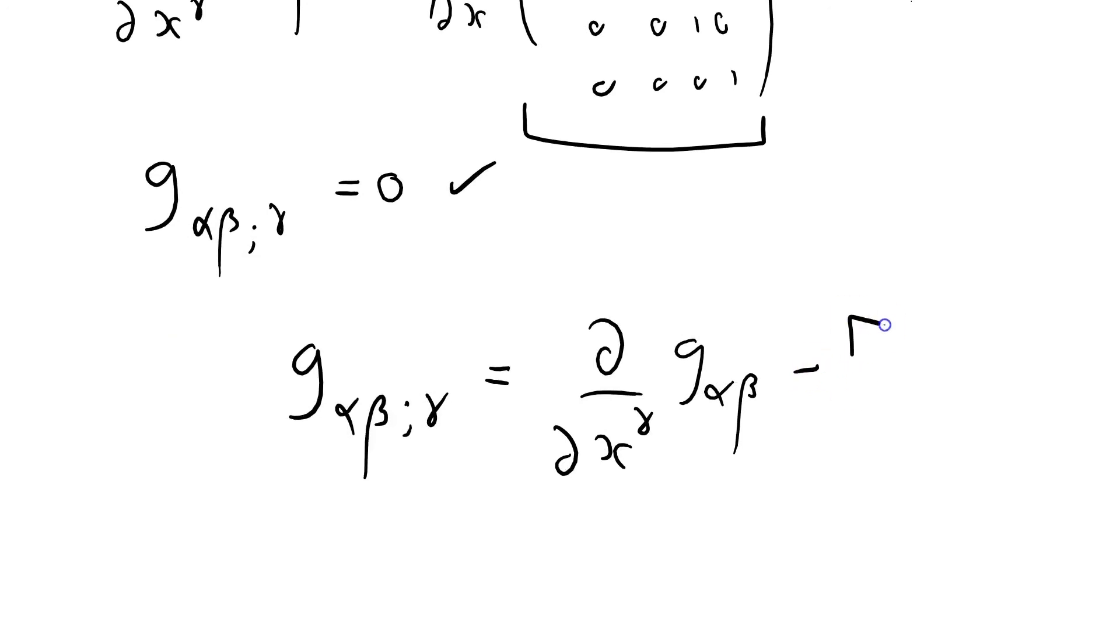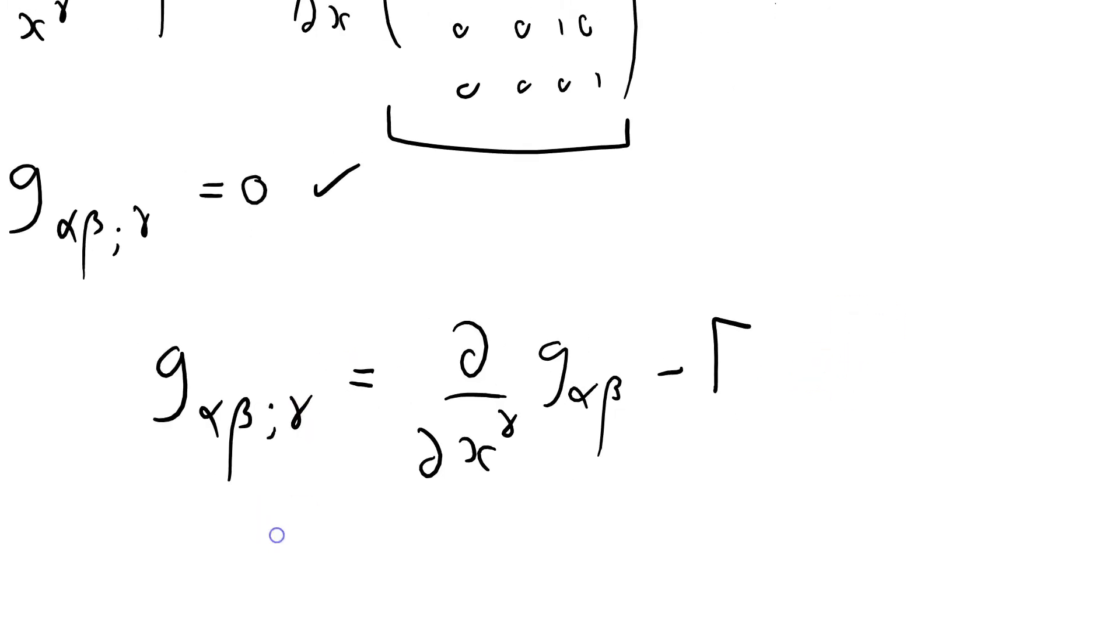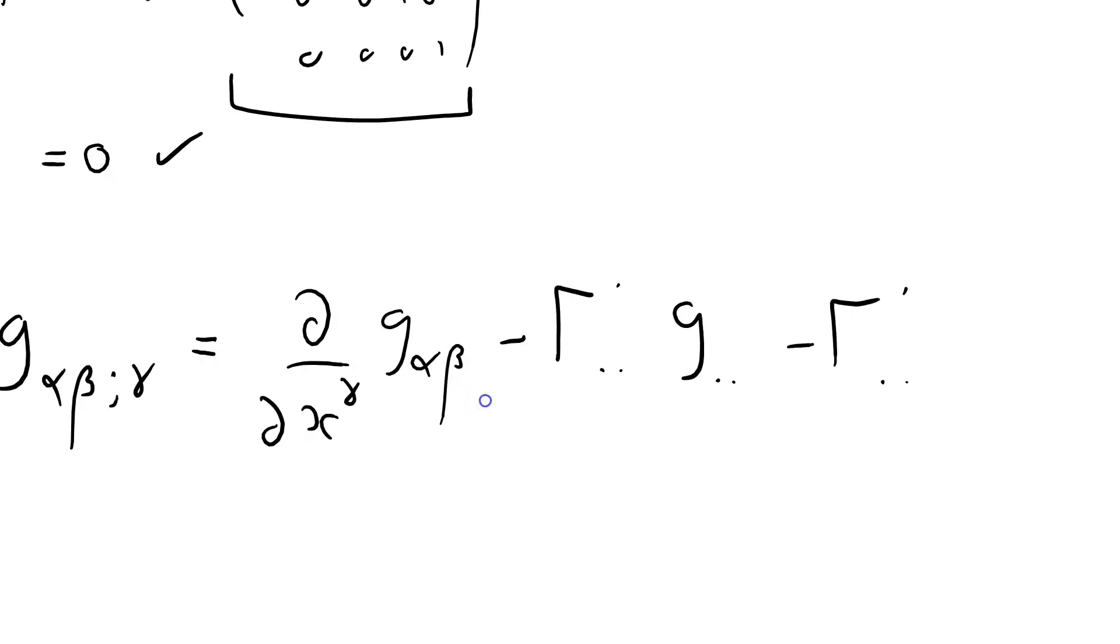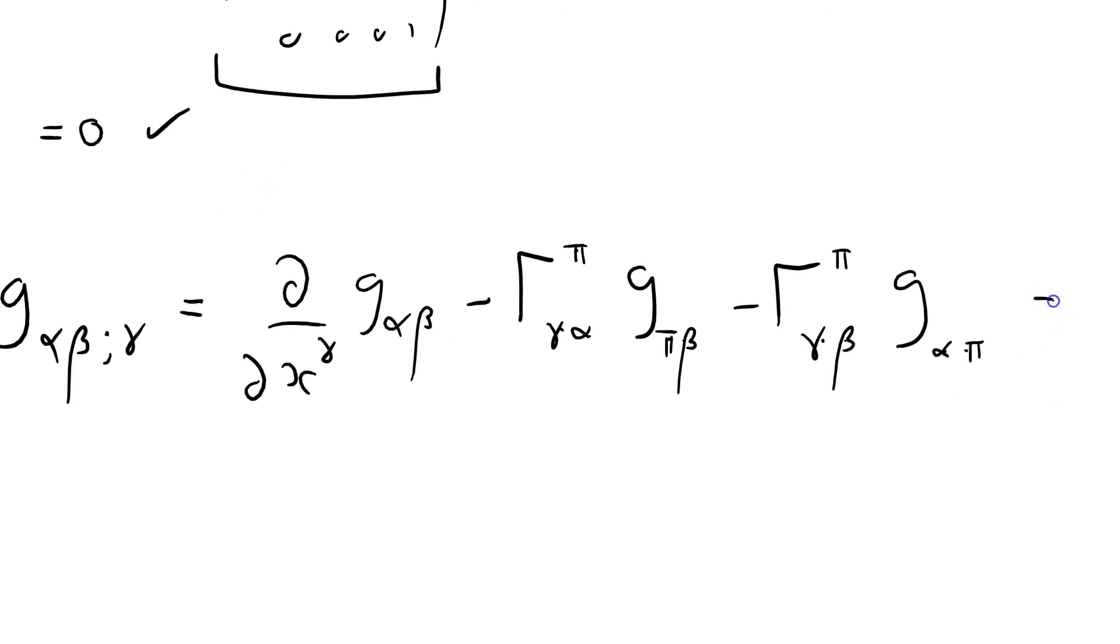And we've got two Christoffel symbol adjustments. Now remember I always put the skeleton in. So I'm going to replace the first one with a pi, that's leaving a beta. Here I'm going to replace the second one with a pi, that must be an alpha. What's left? We have got a gamma downstairs and an alpha. And here we've got a gamma and a beta. There is quite a lot going on here. And I can tell you that that equals zero.